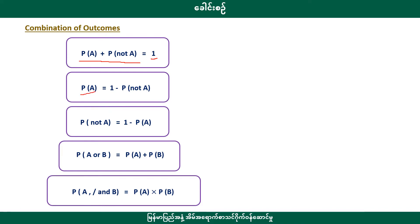The probability of A is 1. The probability of A or B is the probability of A or B. It is a probability of A or B.